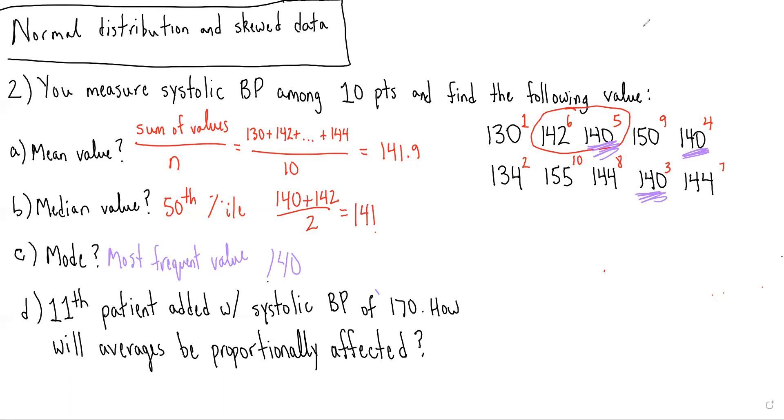We remember that if a data set is skewed, the mean value is the most affected, followed by the median value, followed by the mode value. In this case, because 170 represents a skewed value, a positively skewed value in that it's bigger than the averages that we're finding, we would expect the mean to be most skewed in the positive direction, followed by the median, and then followed by the mode. Actually, the mode wouldn't actually be affected in this case.